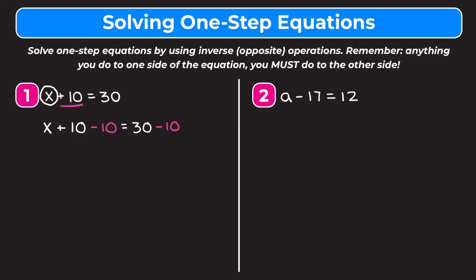Now we have plus 10 and minus 10. Positive 10 and negative 10 are opposites so when we combine them they go to 0. We're left with x on the left side, which is our goal, and on the right side 30 minus 10 is equal to 20, so we get that x is equal to 20. The cool thing about solving equations is that we can always check our answer.